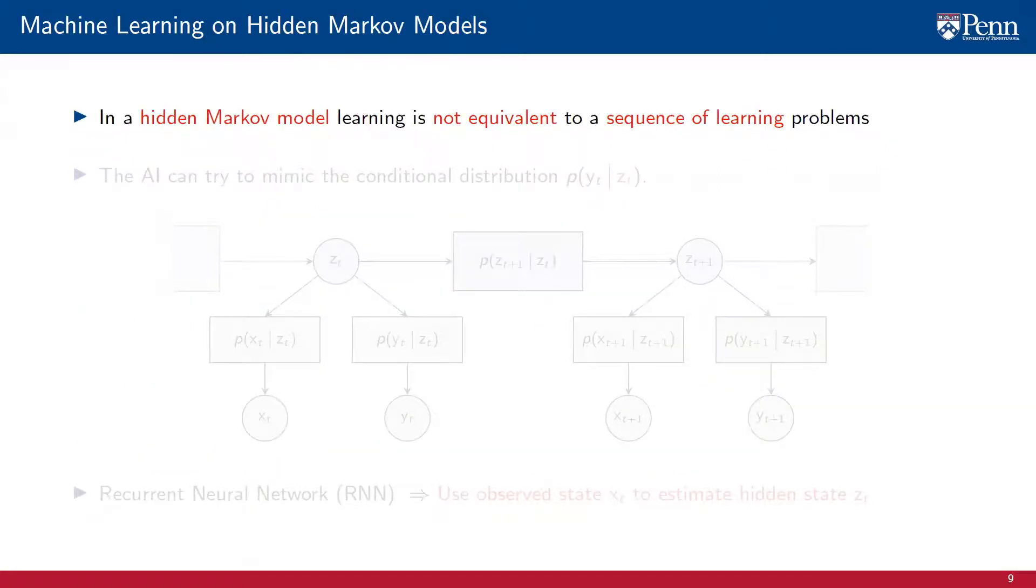Indeed, in hidden Markov models, learning is not equivalent to a sequence of learning problems. The hidden state zt is a Markov process. Its probability distribution is a chain of conditional probabilities in which the state of time t plus 1 depends only on the value of the process of time t.